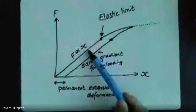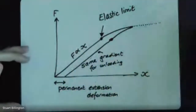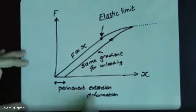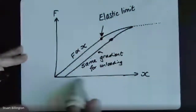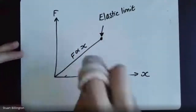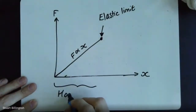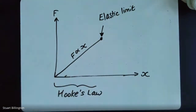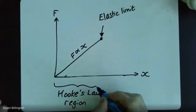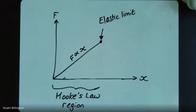Let's visit this part of the graph - the F is proportional to x bit - and update it slightly for A-level. This part of the graph is referred to as the Hook's Law region, sometimes called the elastic region or the region of proportionality. At A-level your examiner favors the term 'Hook's Law region' so we should probably use that one.